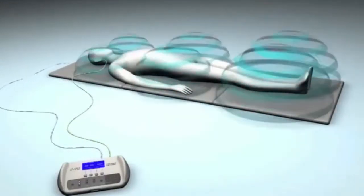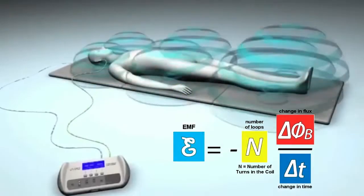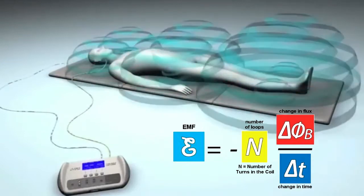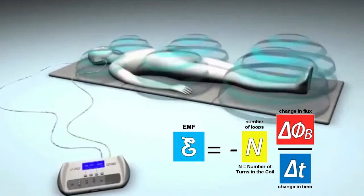Let's look at Faraday's law one more time: EMF equals minus N times delta phi over delta T. The induced EMF, which drives the current, equals minus the number of turns times the change in magnetic flux over change in time. We're going to use this equation now and apply it to PEMF devices in many different ways. We'll go through several examples of how PEMF and Faraday's law go hand-in-hand, and why Faraday's law is so important in PEMF therapy devices.